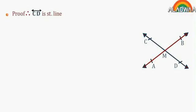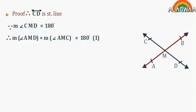Since CD is a straight line, and since the measure of angle CMD equals 180 degrees, therefore measure of angle AMD plus measure of angle AMC equals 180. (1)